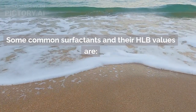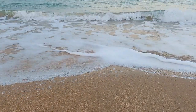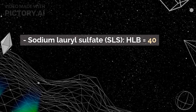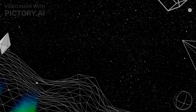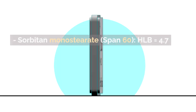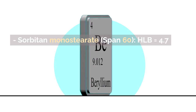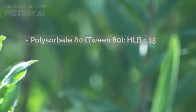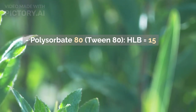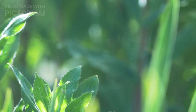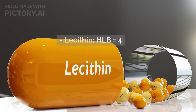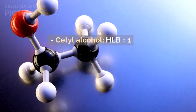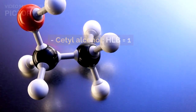Some common surfactants and their HLB values are: Sodium lauryl sulfate (SLS), HLB = 40; Sorbitan monostearate (SPAN 60), HLB = 4.7; Polysorbate 80 (Tween 80), HLB = 15; Lecithin, HLB = 4; Cetyl alcohol, HLB = 1.